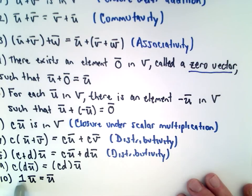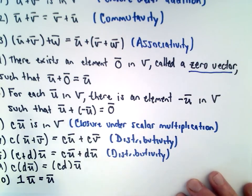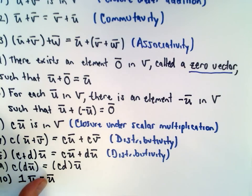Lastly, if we take one and multiply that by U, we get the vector U back. So those are the axioms.